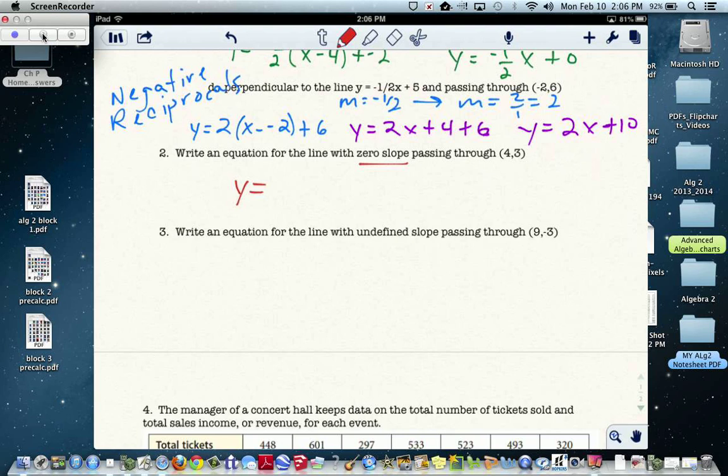So what this is telling you is that you're going through the solution point, and what y value is in the solution point? It's a 3. So our equation would be y equals 3. Horizontal, slope 0.